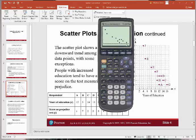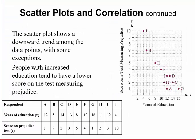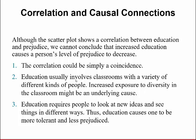This is telling me there's a downward trend in the data — as years of education increases, a person's score on the prejudice exam decreases. There's a negative relationship between the variables. Although the scatterplot shows a correlation between education and prejudice, we cannot conclude that increased education causes a person's level of prejudice to decrease — this correlation could simply be coincidence. Education involves classrooms with a variety of different kinds of people, so increased exposure to diversity might be an underlying cause. Also, education requires people to look at new ideas and see things in different ways, making one more tolerant and less prejudiced.